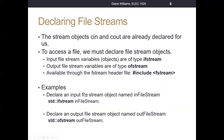We're going to include fstream. If we want to declare an input file stream object named inFileStream, we use std::ifstream — it's in the standard namespace, so we use the scope resolution operator. ifstream is the type and then we follow the identifier naming rules. Similarly, if we want to declare an output file stream object named outFileStream, we use std::ofstream — data type then variable name.